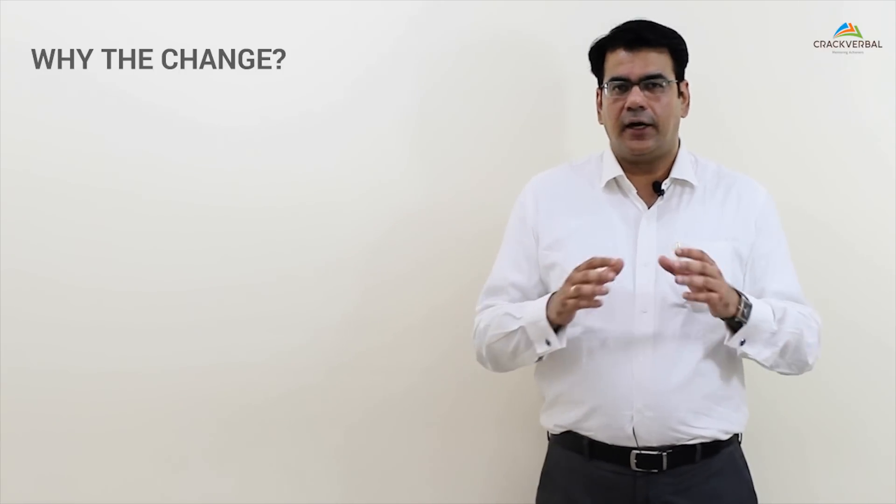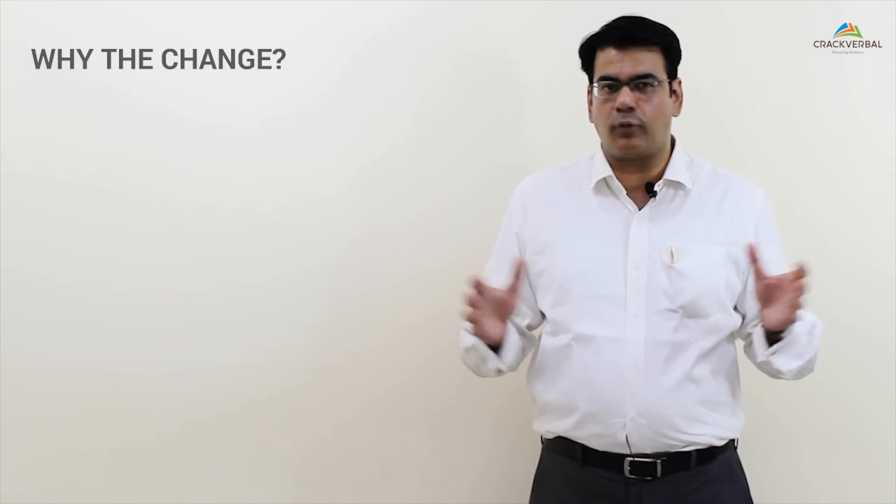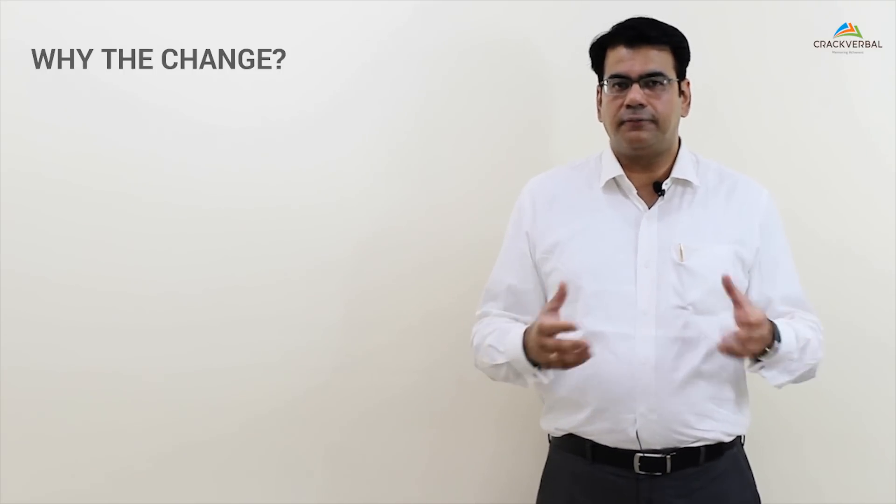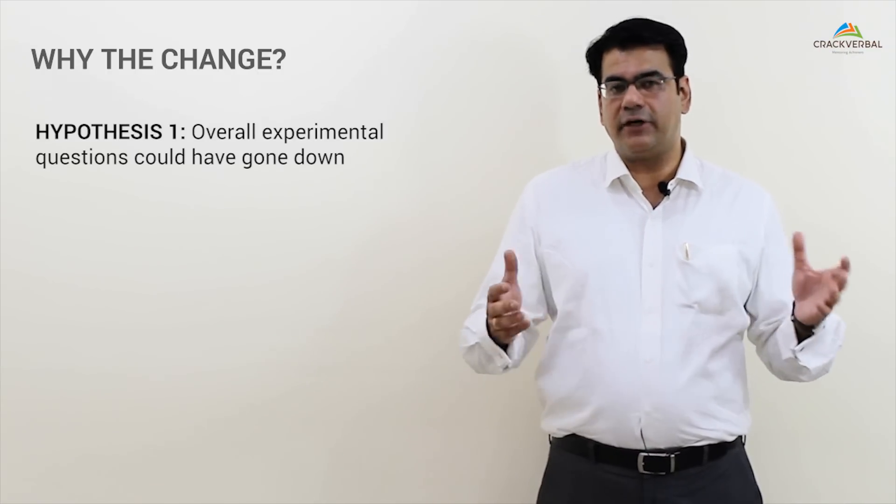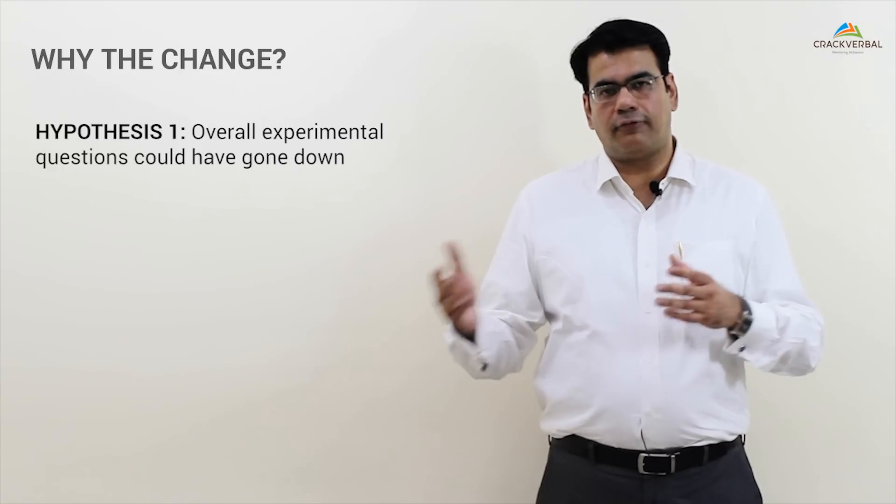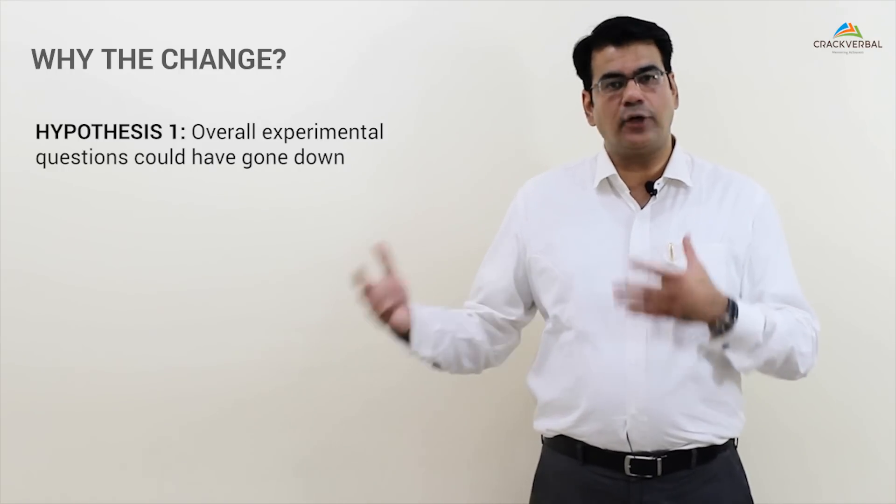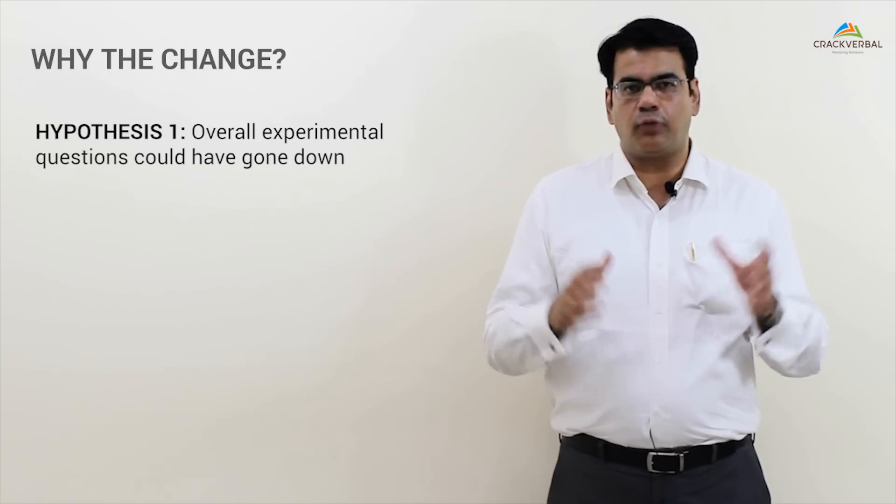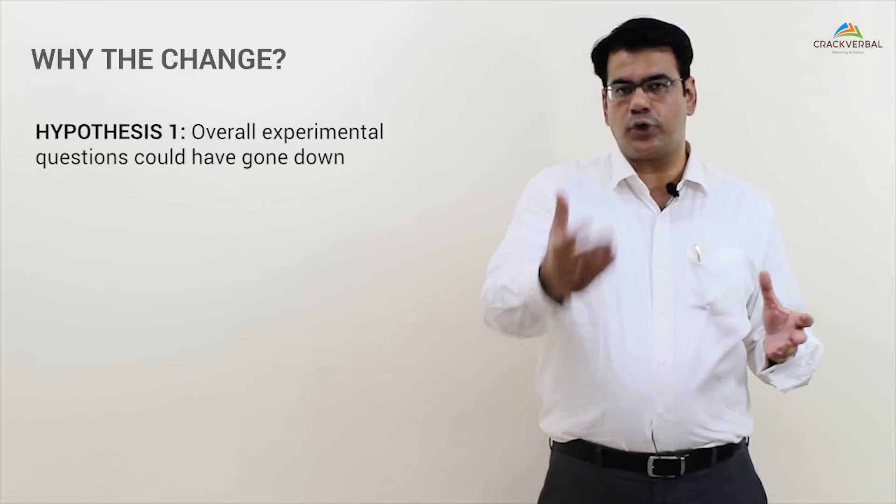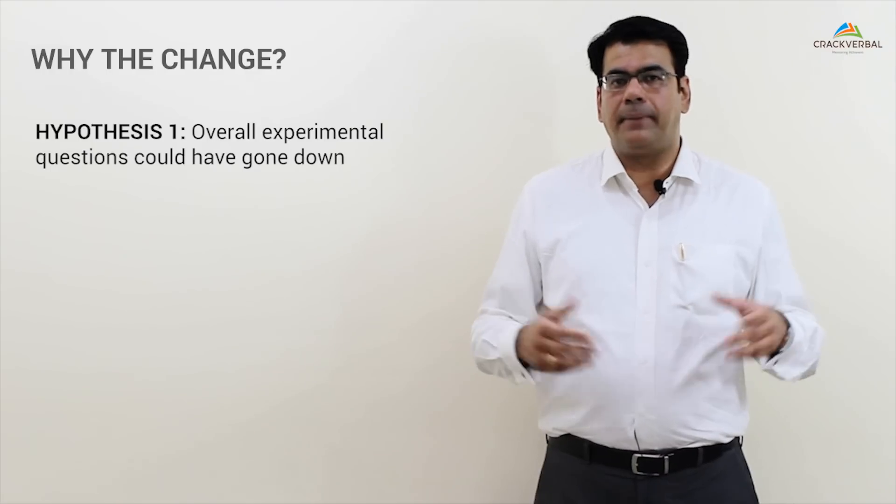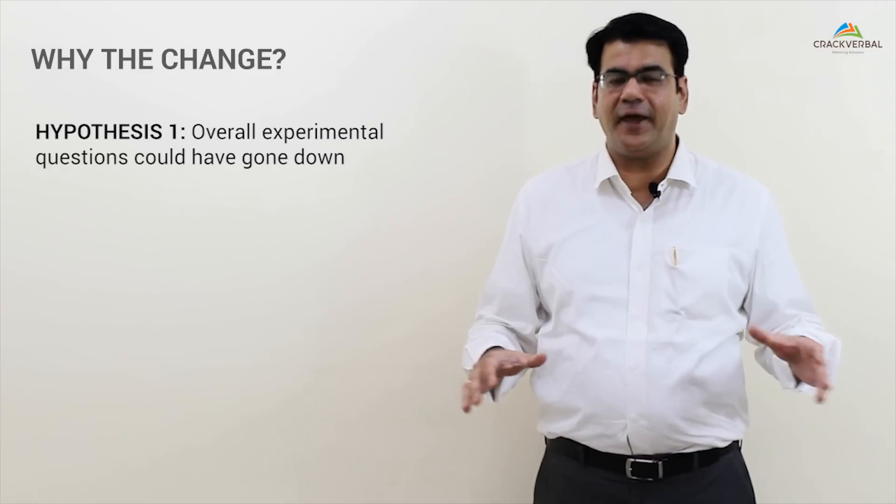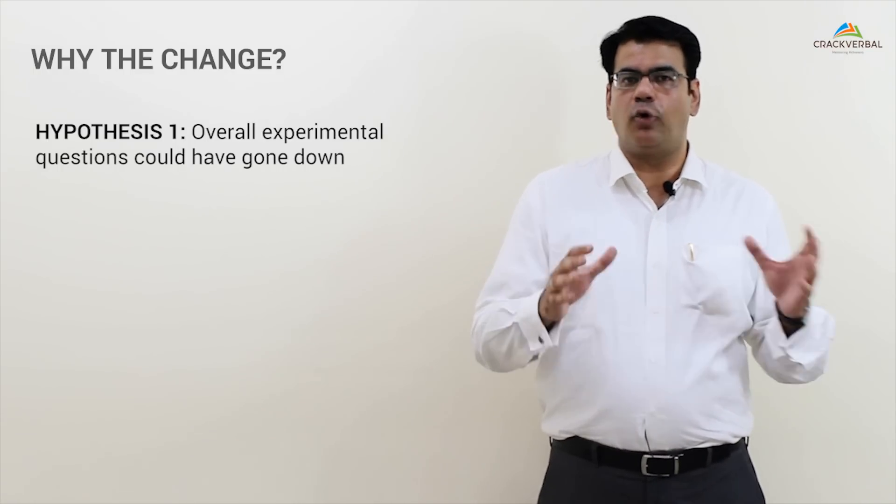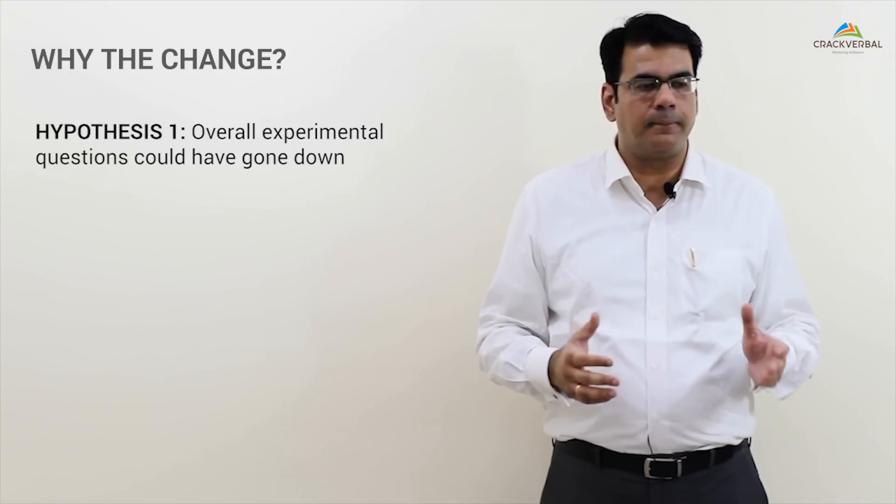Now, why has GMAT done this? Very honestly, there are a couple of reasons. The first reason is perhaps—if you know the last GMAT, out of 41 questions in Verbal, 11 were experimental, and out of 37 questions in Quant, nine were experimental. Perhaps the total number of questions counted towards your GMAT score remain the same. Perhaps what's really reduced is the experimental questions. We don't know yet, but this is one hypothesis: the overall experimental questions could have gone down.